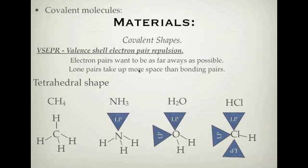Covalent shapes — the way these molecules form together, they form different shapes and we give them different names. The reason they come up with different shapes is due to VSEPR — valence shell electron pair repulsion. That's a large name for the idea that electron pairs want to be as far away from each other as possible, and that lone pairs take up more space than bonding pairs.